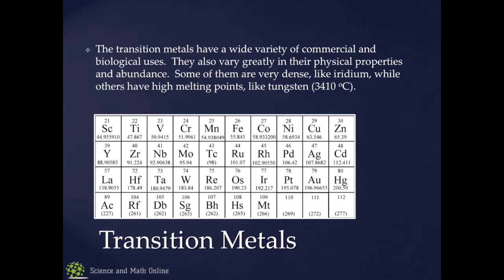Transition metals — these are groups 3 through 12, the D block. They have a wide variety of uses and vary greatly in their physical properties and abundance. Some of them are super dense; others have high melting points like tungsten. One of tungsten's historical uses was filaments for light bulbs because it won't melt — it can withstand the heat generated by the light bulb without melting.